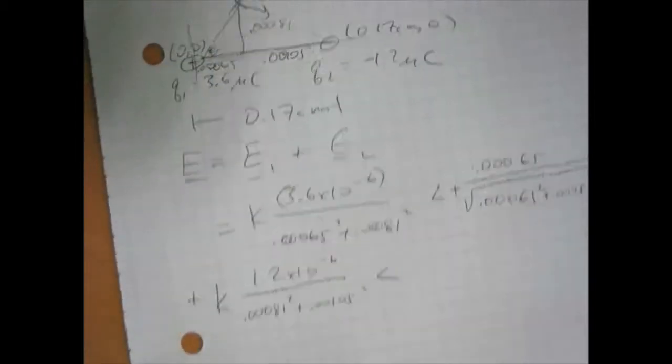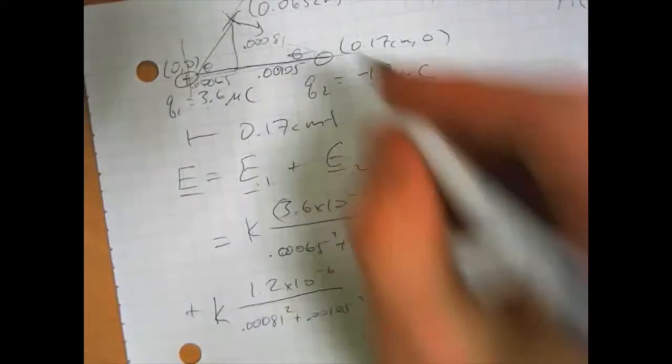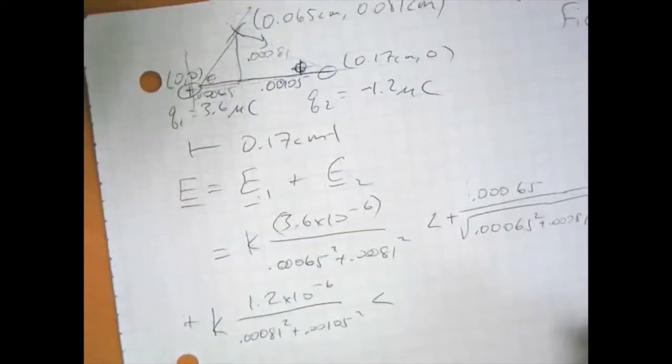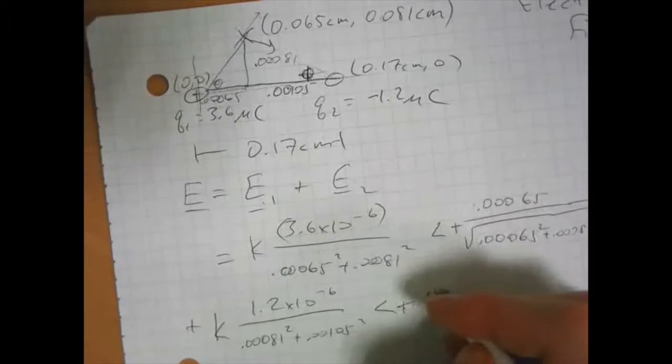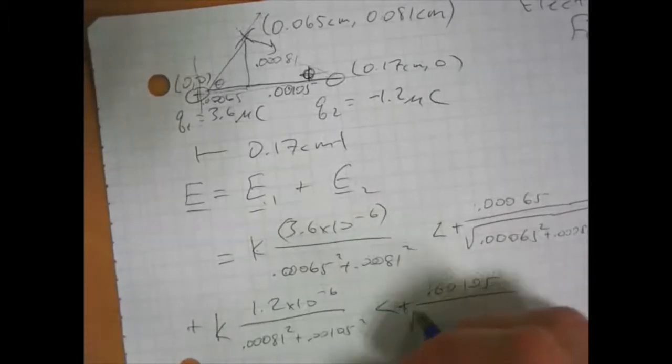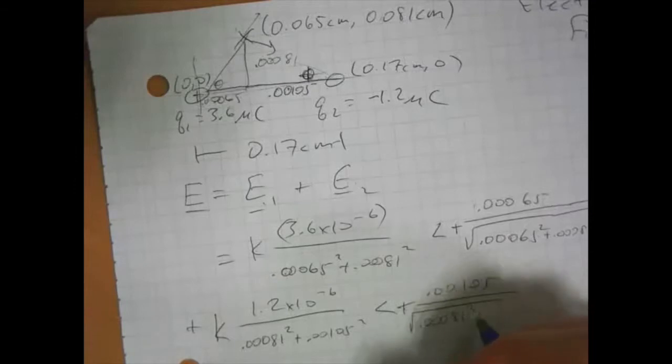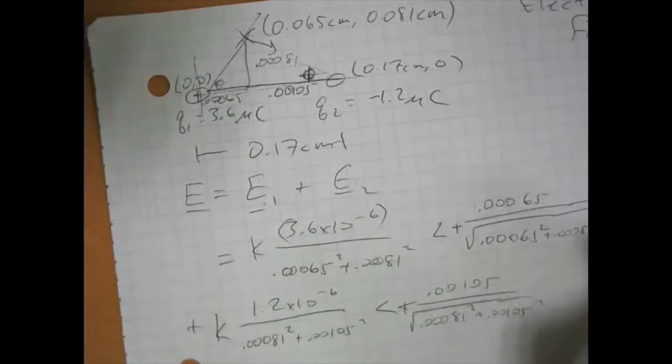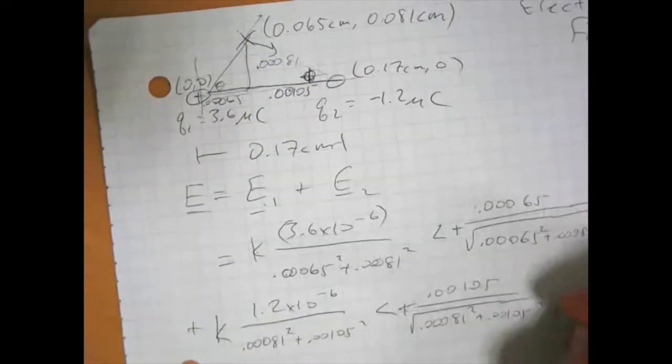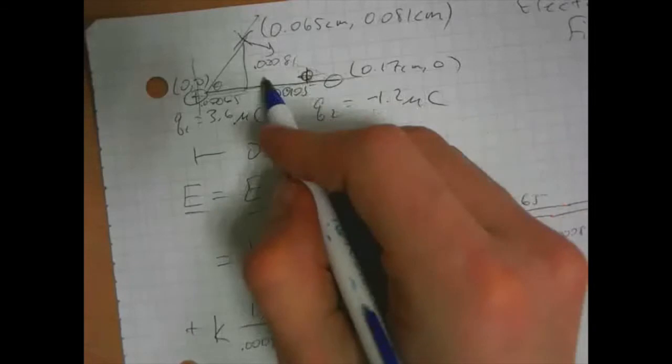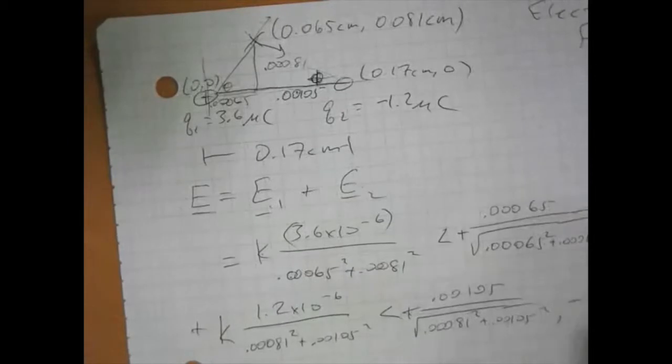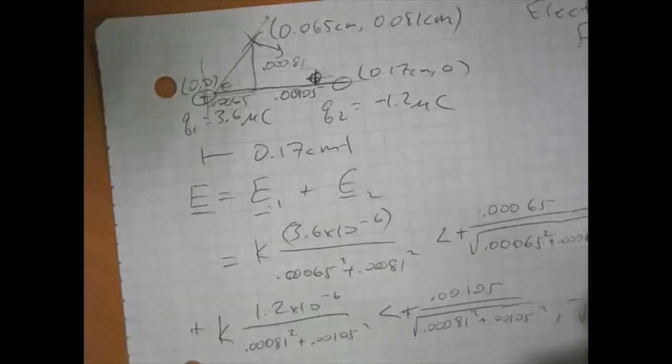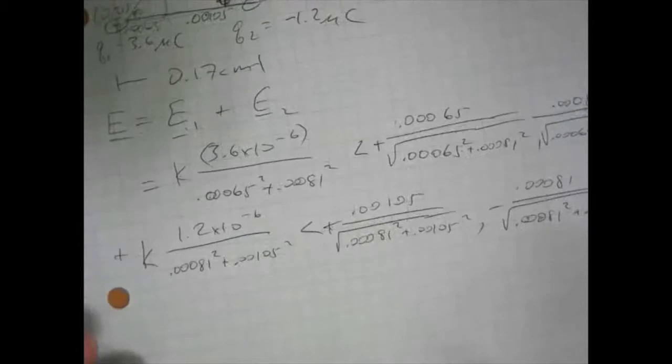And then our x component is going to be positive. If you look at this angle, I'll label it phi, just so it's different. Positive x component, so that's going to be cosine theta 0.00105 over the square root of 0.00081 squared plus 0.00105 squared. And then since it's down and to the right, this y component is going to be negative, and it's the sine of this angle, which is this 0.0081 over the hypotenuse, which is again, the same thing. So the numbers get pretty complicated here.